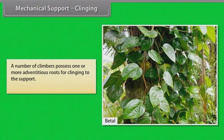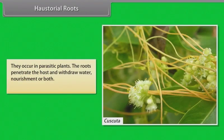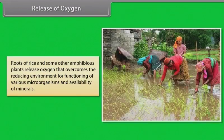Mechanical support — clinging: a number of climbers possess one or more adventitious roots for clinging to support. Examples: betel, Tecoma, ivy. Haustorial roots — they occur in parasitic plants; the roots penetrate the host and withdraw water, nourishment, or both. Examples: Cuscuta, Viscum. Release of oxygen — roots of rice and some other amphibious plants release oxygen that overcomes the reducing environment for functioning of various microorganisms and availability of minerals.